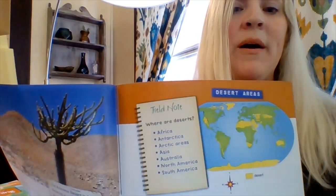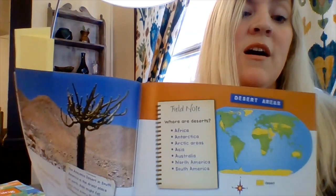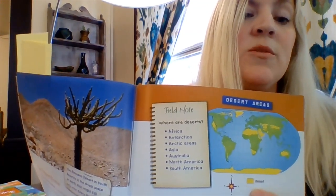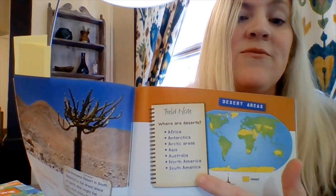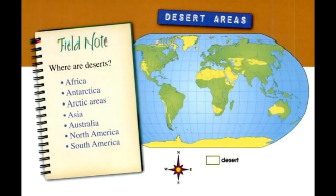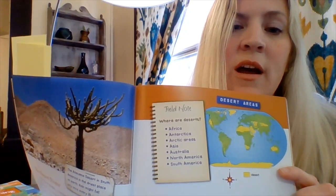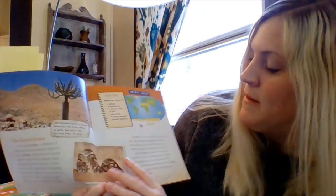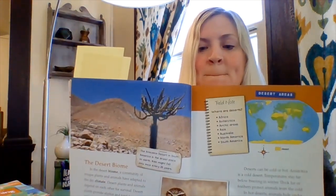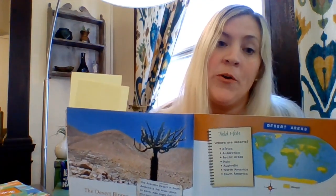Here we have a map of desert areas. All the places in yellow are places on earth that have deserts. As you can see, it's every single continent: Africa, Antarctica, Arctic areas, Asia, Australia, North America, and South America. Maybe I didn't see Europe on there. Go ahead and pause and think — what questions do you have at this point in the text? Share with somebody at home or in your own private brain. Do that now.